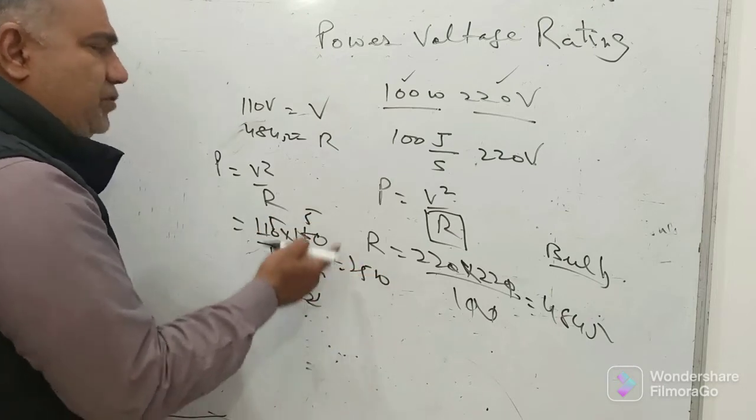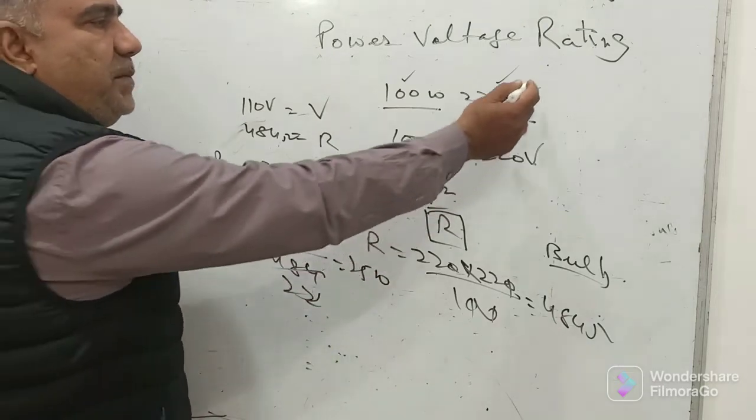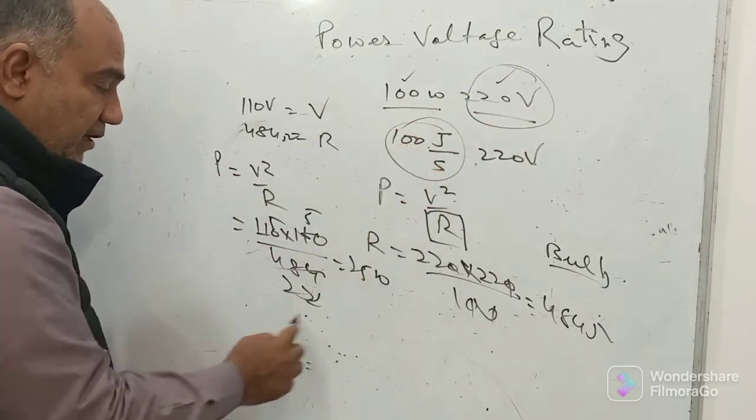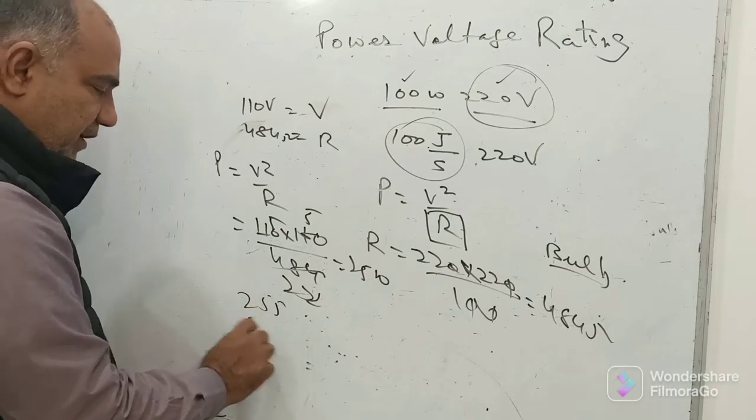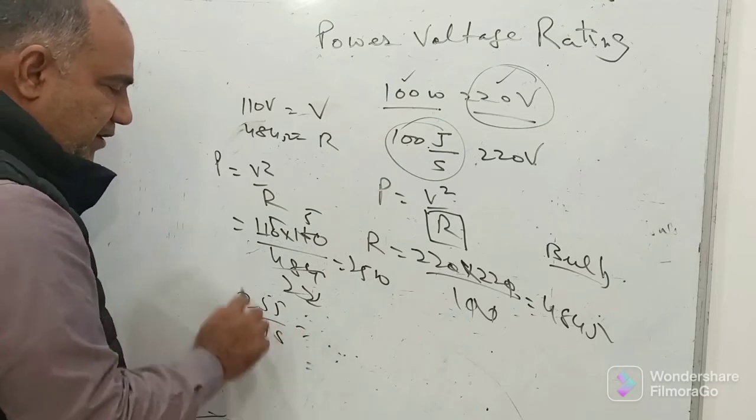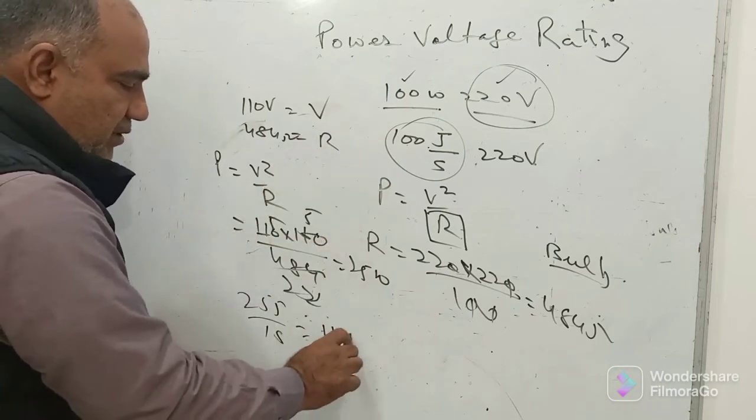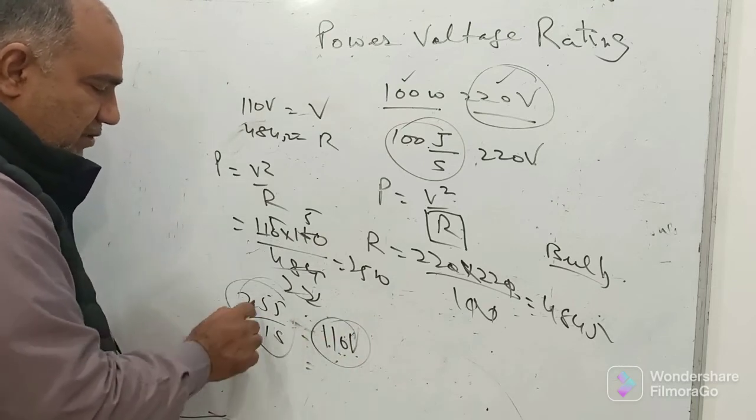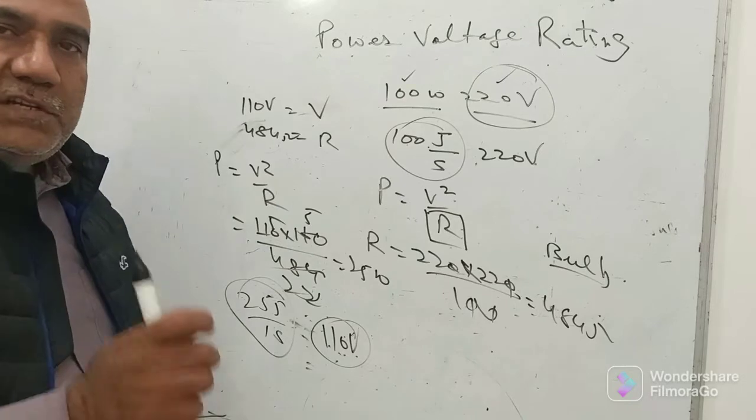Now the same bulb which when was operated at 220 volt was consuming 100 joules of energy in one second, will consume 25 joules of energy in one second when it is operated at 110 volt. When operated at 110 volt, it will be able to consume just 25 joules in one second.